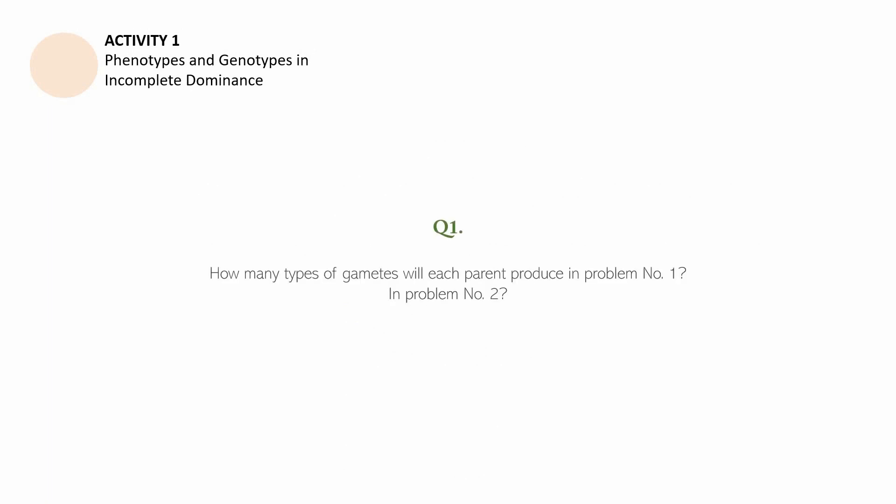Let us answer question number 1. How many types of gametes will each parent produce in problem number 1? In problem number 2. What is the phenotype of a heterozygous 4 o'clock flower? Question number 3. What are the possible phenotypes of the offspring from the cross of the parental plants in problem number 1? In problem number 2. What are the possible genotypes of the offspring from the cross of the parental plants in problem number 1? In problem number 2. We are done dealing with the questions. I hope you have already finalized your answers. Let us answer them.